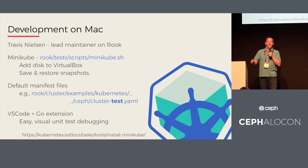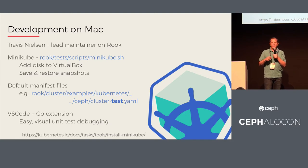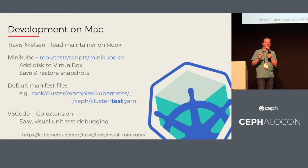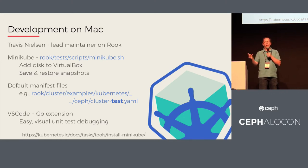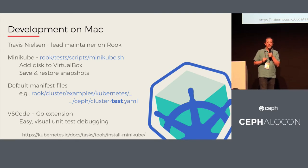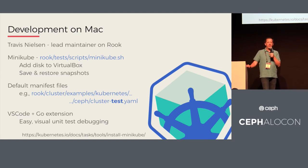When testing changes in the operator — how is it starting the mons, how is it starting the OSDs — we want the simplest environment to validate the change. We have manifest files in the Rook repo with the test suffix: cluster-test.yaml or objectstore-test.yaml. When we create those, it creates the minimal optimal environment for a single-node cluster — no replication, only one OSD, one mon. It just gets the cluster up and running. That's another way to iterate quickly: have a simple deployment.